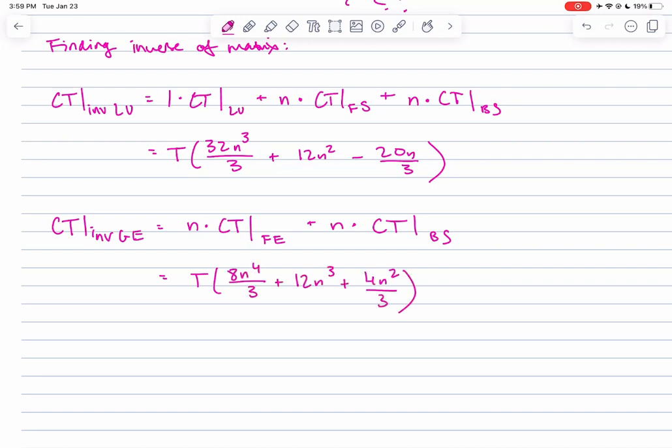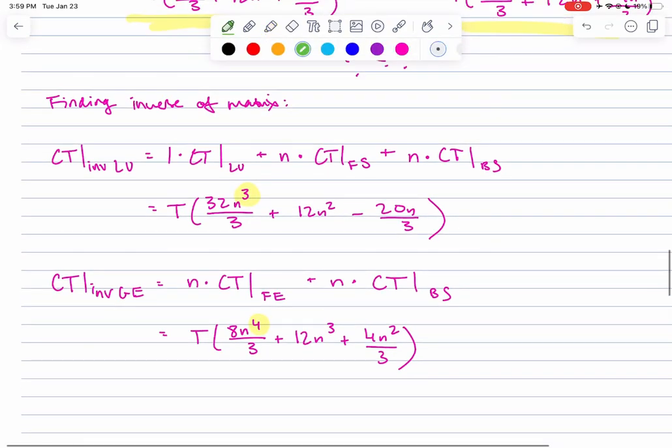Clearly the dominating n⁴ means that for large values of n, Gaussian elimination is actually really expensive. Thanks for watching.